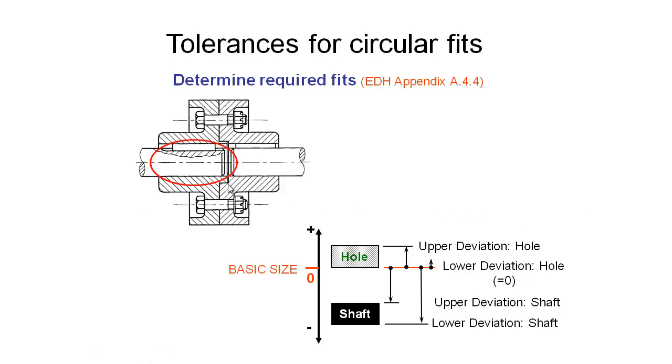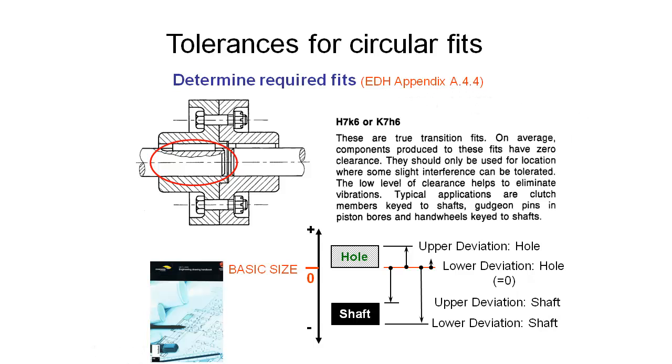If we look at the shaft itself and think about how it's going to fit inside this first half of the shaft coupling, what we do to figure out what kind of fit that might require is to look into our engineering drawing handbook Appendix A4.4. It's a very useful resource with a breakdown and description of some of the different fits that are available to you as designers.